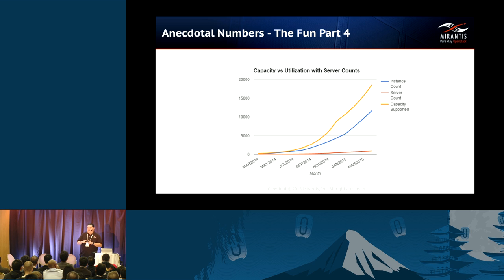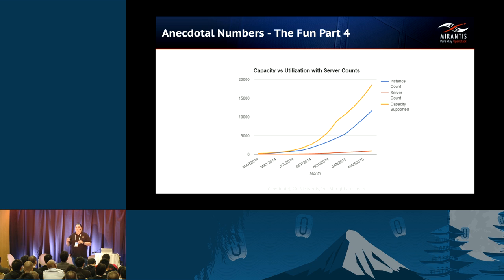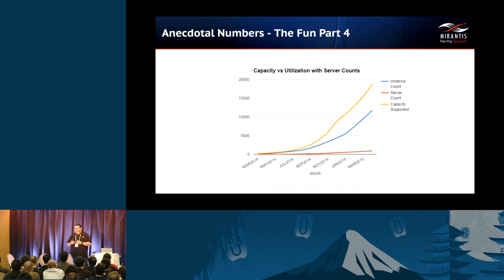When you get up to a certain scale — seeing just shy of 10,000 instances — you can back off that number. Up to that point, you're right at about a 50% utilization trigger where you need to start the provisioning process again. Once you get to a scale around 10,000 instances, you can back it off to about 80%. So you're keeping a 20% buffer instead of a 50% buffer, which is why it's easier with a larger cloud to manage capacity.